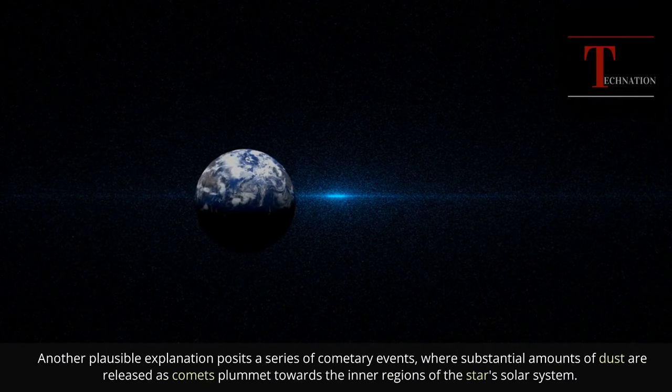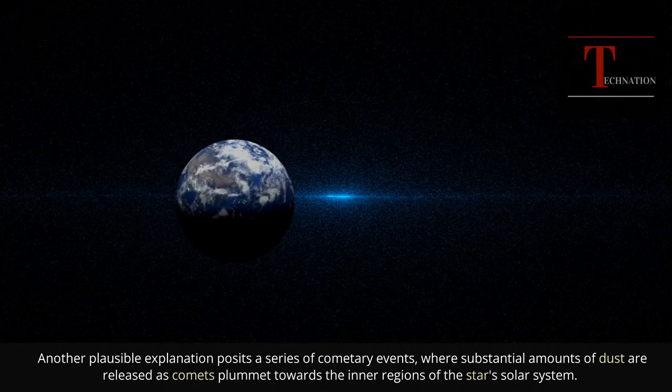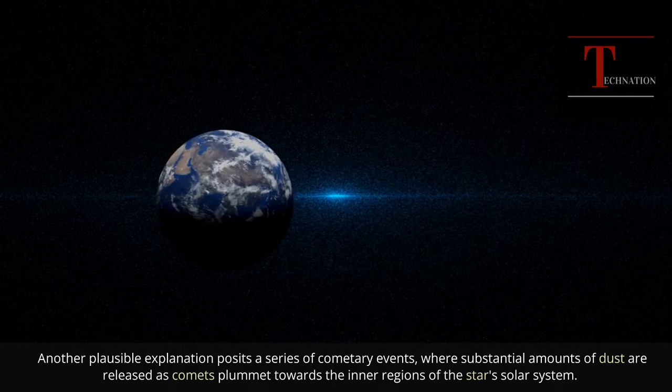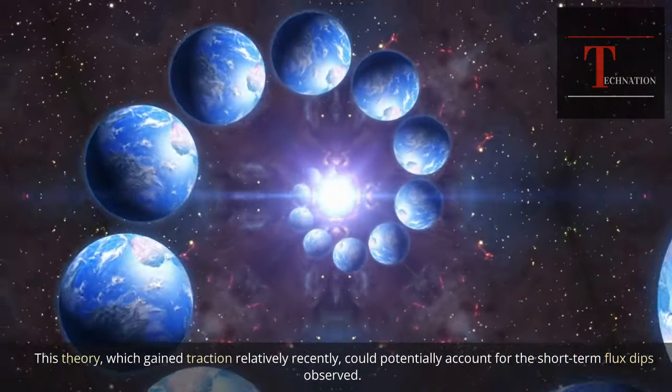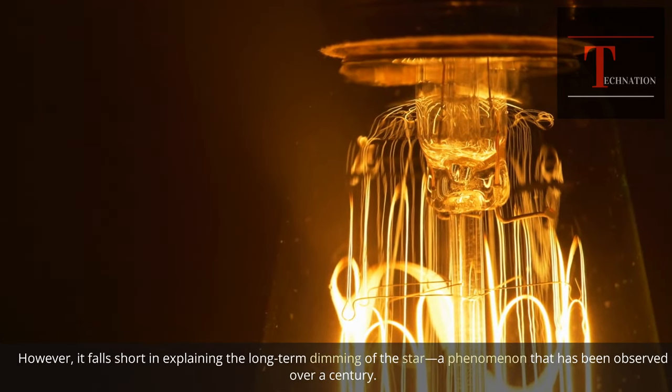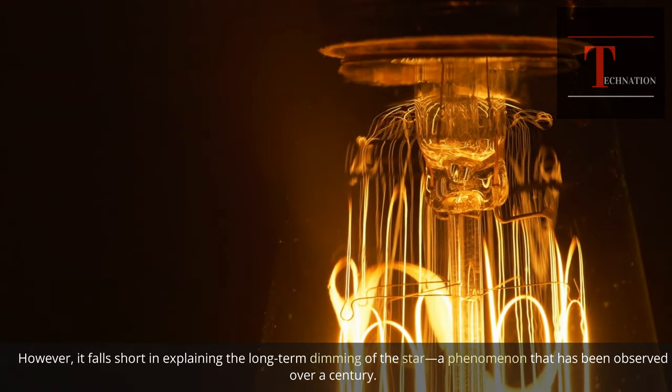Another plausible explanation posits a series of cometary events, where substantial amounts of dust are released as comets plummet towards the inner regions of the star's solar system. This theory, which gained traction relatively recently, could potentially account for the short-term flux dips observed. However, it falls short in explaining the long-term dimming of the star, a phenomenon that has been observed over a century.